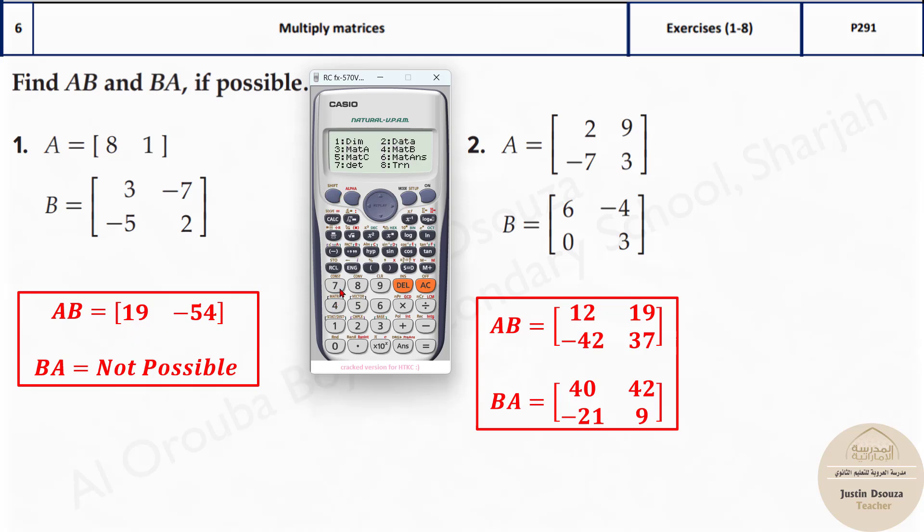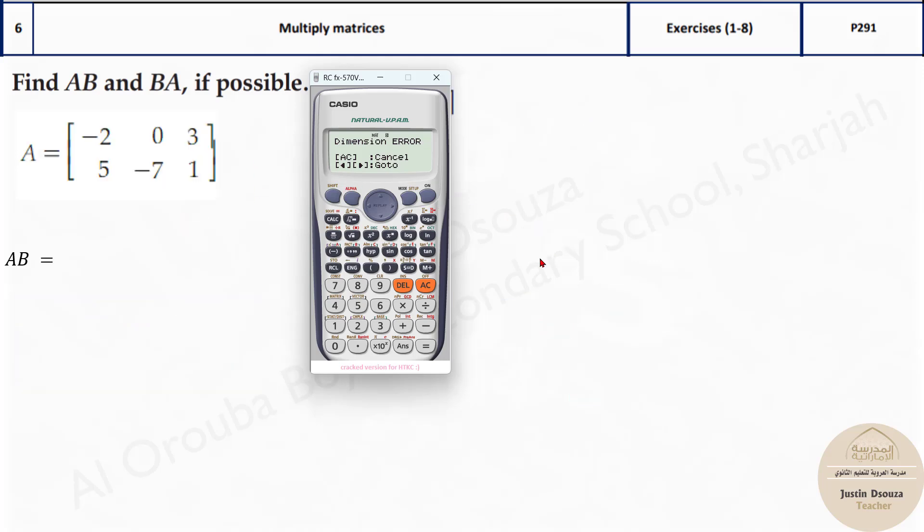When you press equal to, you are getting the matrix 19 and minus 54. Now let's try the same thing: matrix B multiplied by matrix A. What happens? Here you get a dimension error. That means this is not possible to be multiplied. I will tell you how the dimension thing works.